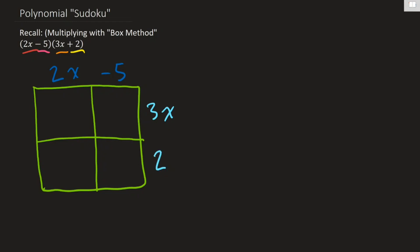And the way that area model works is this edge here is sort of 2x long and this edge here is 3x. So we're multiplying 2x by 3x in this box down here. And 2x times 3x is 6x squared. And our next edge is negative 5. So this is negative 5 and the edge next to it is 3x. So negative 5 times 3x is negative 15x.